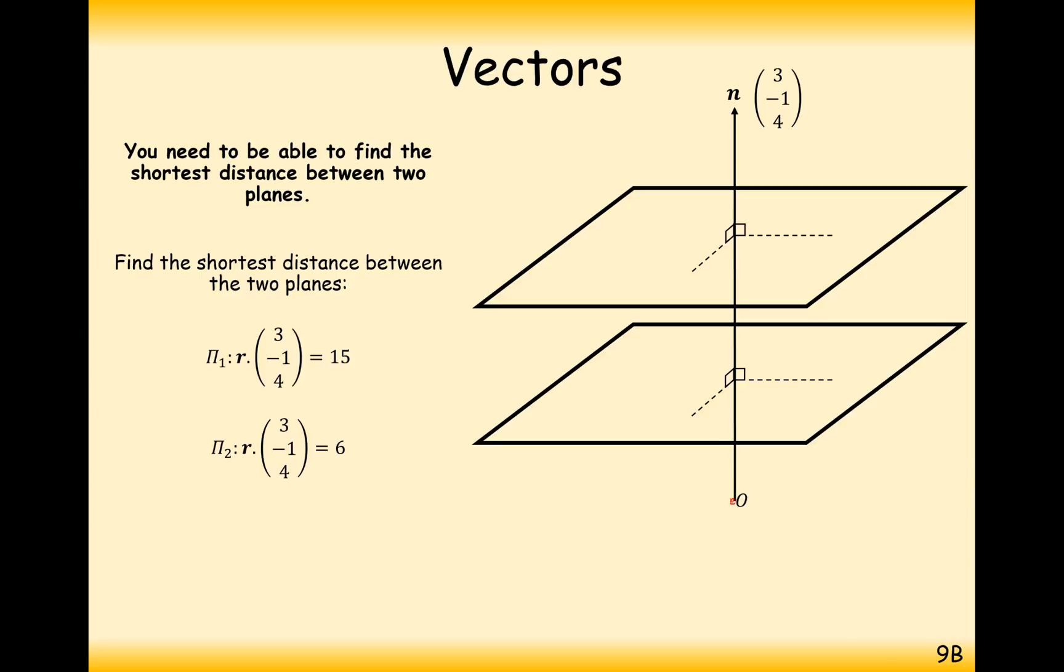What we're going to consider is attaching a line from the origin straight through both of these planes. Given that they're meeting at a right angle, we can just use this normal vector here of (3,-1,4).